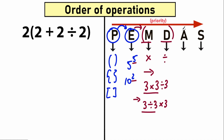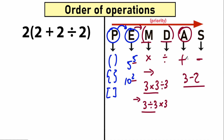The last step: A stands for addition, S stands for subtraction. At this point people often don't need a special order since it's very basic. For example, 3 minus 2 — we can easily solve it. So the steps are: first, parentheses; second, exponents; third, evaluate multiplication and division; and last, addition and subtraction.